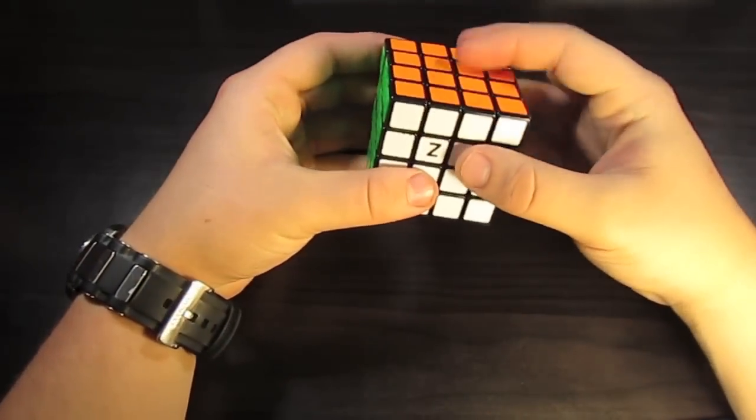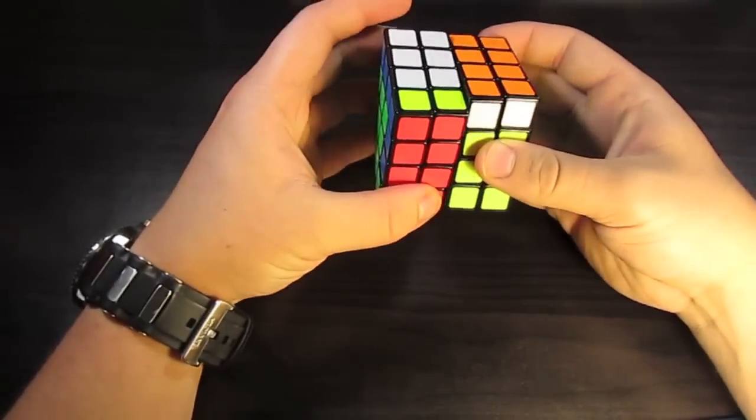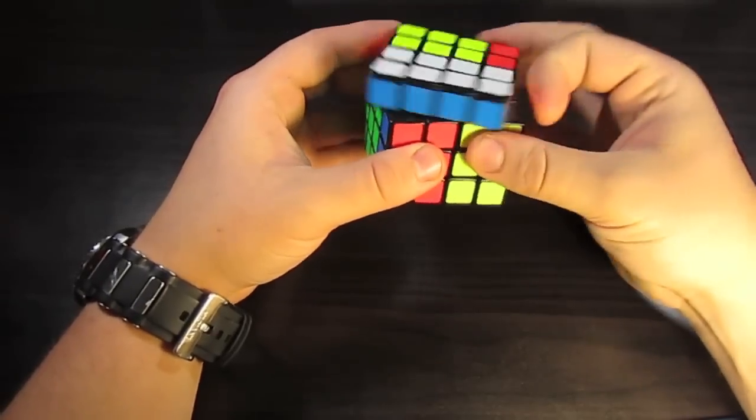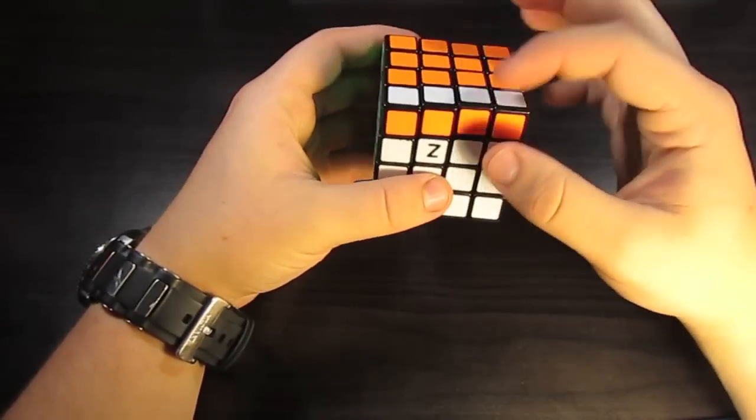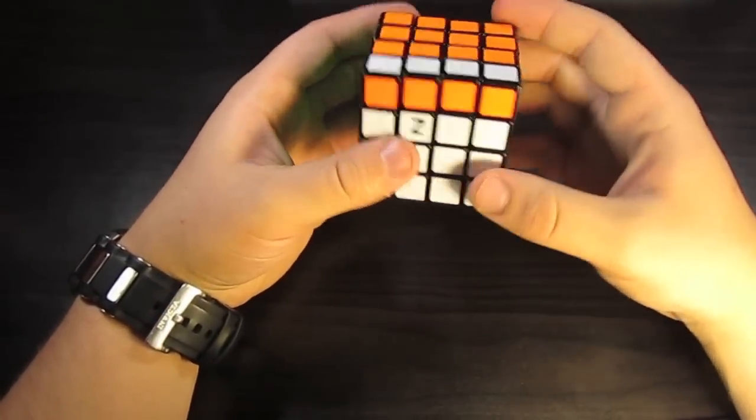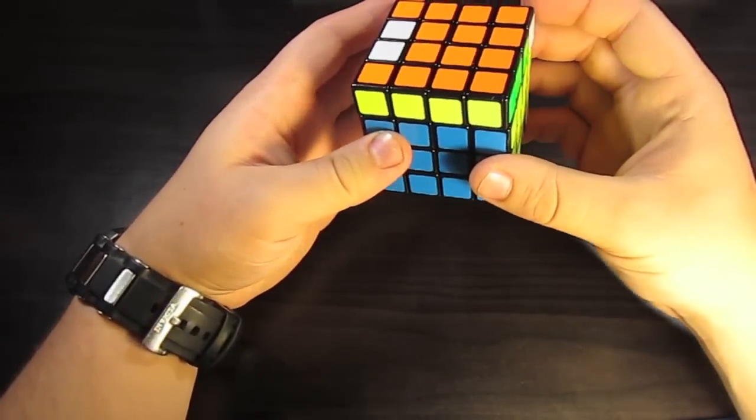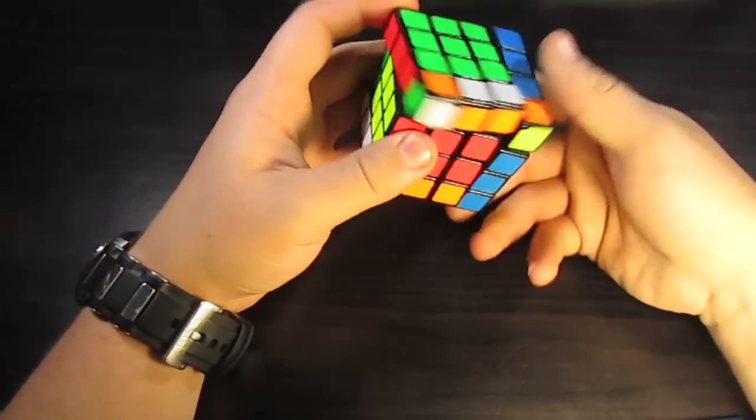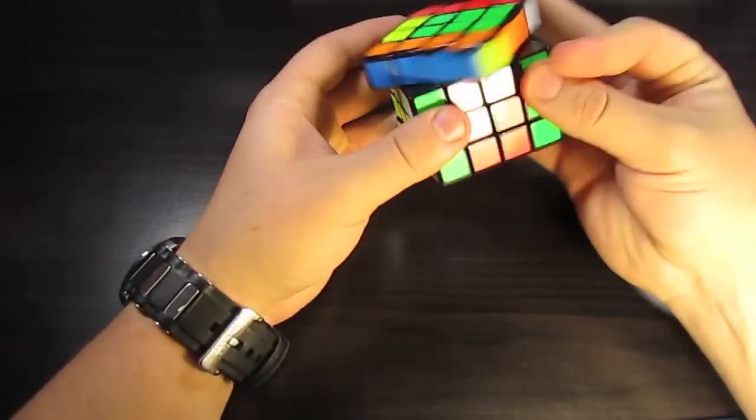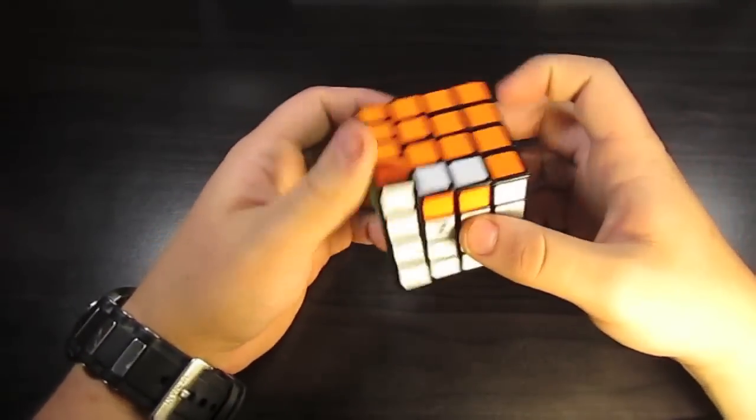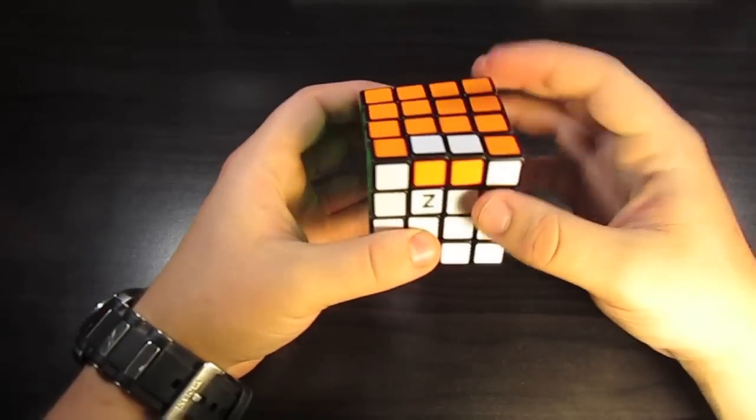So I'm going to go ahead and give this the parity. Okay, so you can see these two have flipped. I'm just going to make it more clear what I did. Okay, so right here, these two are flipped, and everything else is solved. So this is the most complicated parity algorithm.